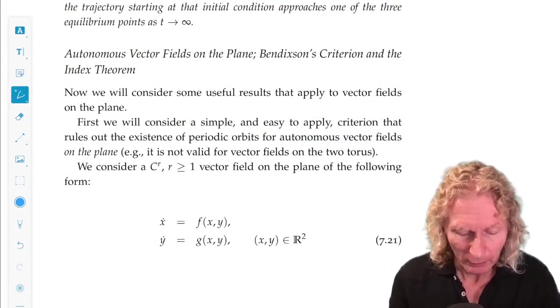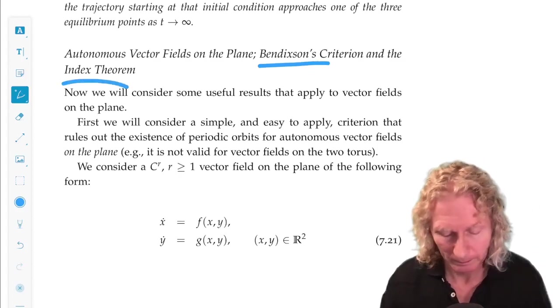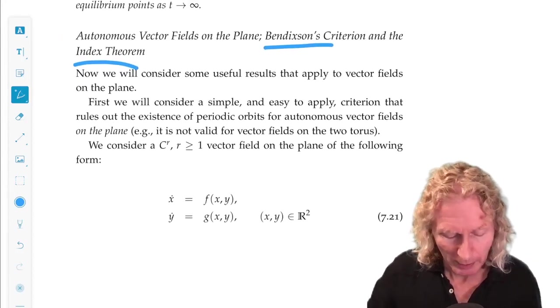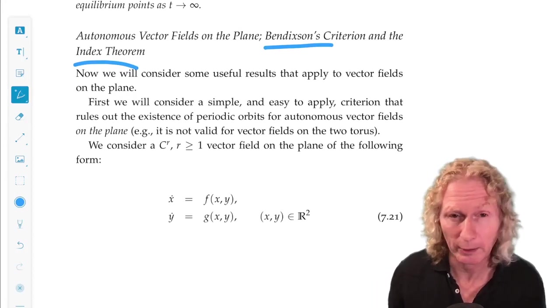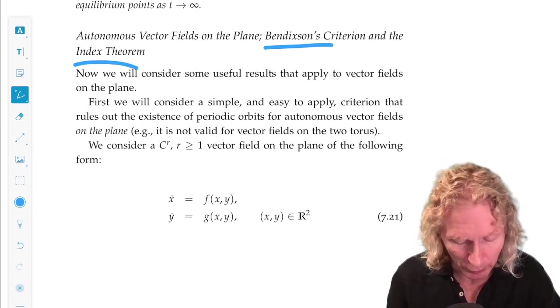So these go by the name of Bendixson's criterion and the index theorem. So the setup, to begin with, we consider C^R, R greater than or equal to 1. We're going to have to differentiate the vector field. We want existence and uniqueness of solutions.